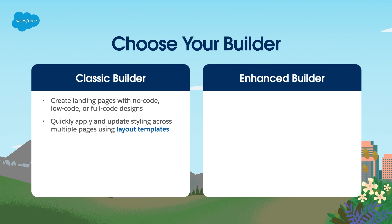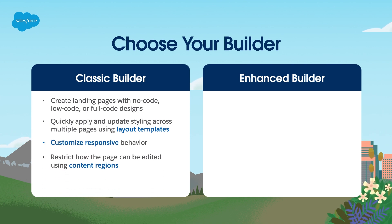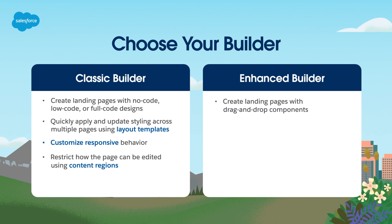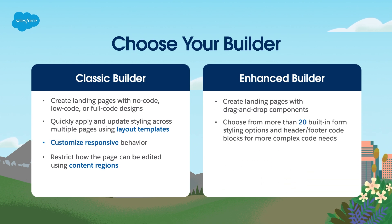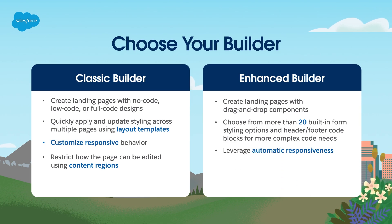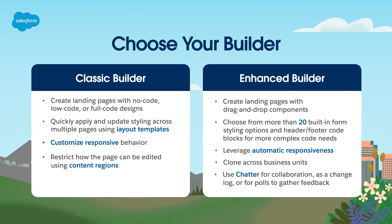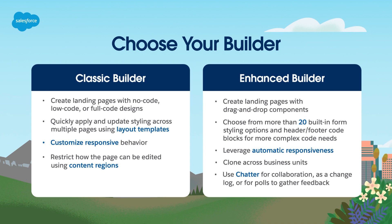With the classic builder, you can quickly apply and update styling across multiple pages using layout templates, customize responsive behavior, and restrict how the page can be edited using content regions. With the enhanced landing page builder, you can create landing pages with drag-and-drop components, choose from more than 20 built-in form styling options and header-footer code blocks for more complex code needs, leverage automatic responsiveness, clone across business units, and use Chatter for collaboration as a change log or for polls to gather feedback. You don't have to pick one builder for all of your pages — you can use different builders for different scenarios. However, once you create a page, you always have to use the same builder to edit it.